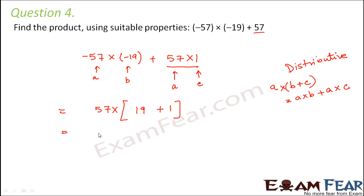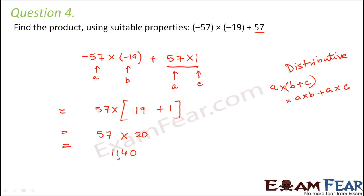From this, we get 57 into 20. Multiplying this is easy — you put a 0 first, then 57 into 2 gives 1140. So you see, by making use of properties we can simplify the calculations.